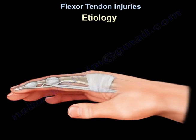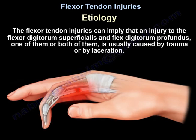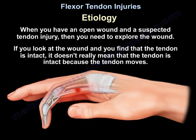Etiology: flexor tendon injuries can imply injury to the flexor digitorum superficialis and profundus — one or both — and are usually caused by trauma or laceration. When you have an open wound and a suspected tendon injury, you need to explore the wound. If you look at the wound and find the tendon intact, it doesn't really mean the tendon is intact, because the tendon moves.